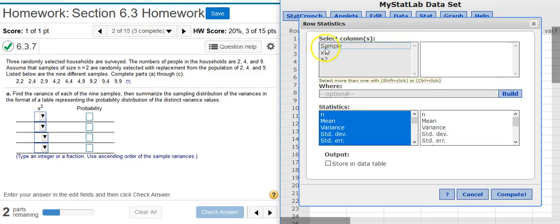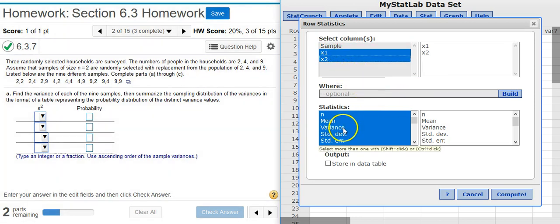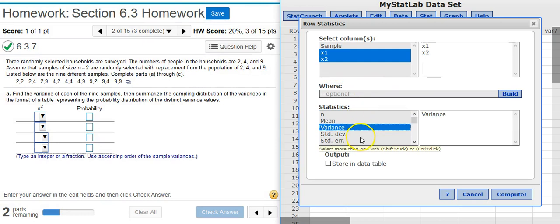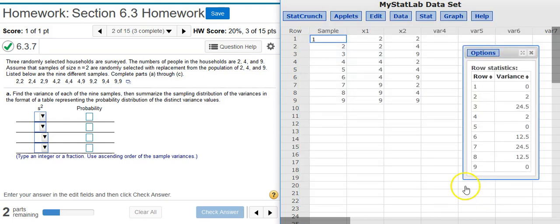We don't want to include the sample number in our calculation, so I'm going to select just x1 and x2. And then down here we're looking for the variance, so we don't need all the default selections there, just the variance. Select, I hit compute. Here are my sample variances listed in the order in which they appeared in the table.